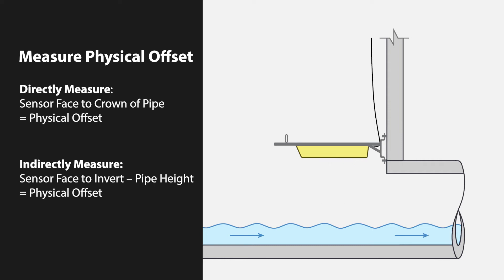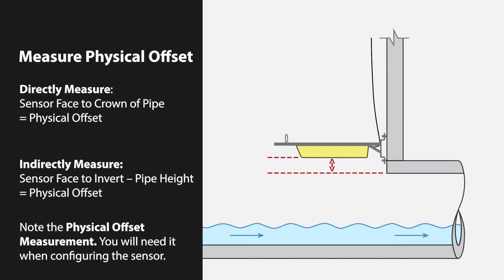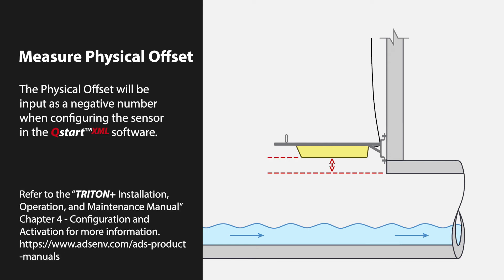To measure indirectly, measure the distance from the face of the sensor to the manhole invert below the front portion of the sensor, and subtract the pipe height from this measured distance. Note the physical offset measurement. The physical offset will be input as a negative number when configuring the sensor in the ADS QStart XML software.